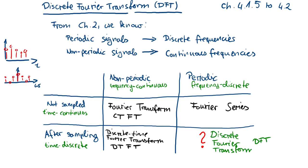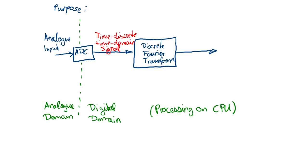The spectrum we obtain will fulfill both properties: it will be discrete and it will be periodic. Imagine you have an analog input and an analog-to-digital converter which applies sampling. We then get a time-discrete time-domain signal, and we apply the Discrete Fourier Transform to obtain a frequency-discrete frequency-domain signal.